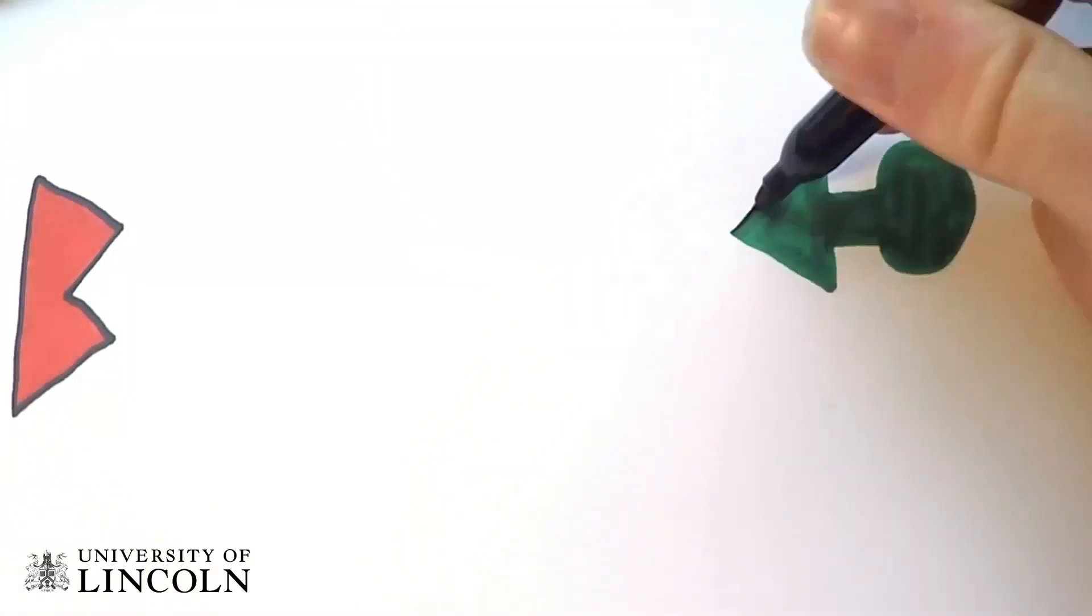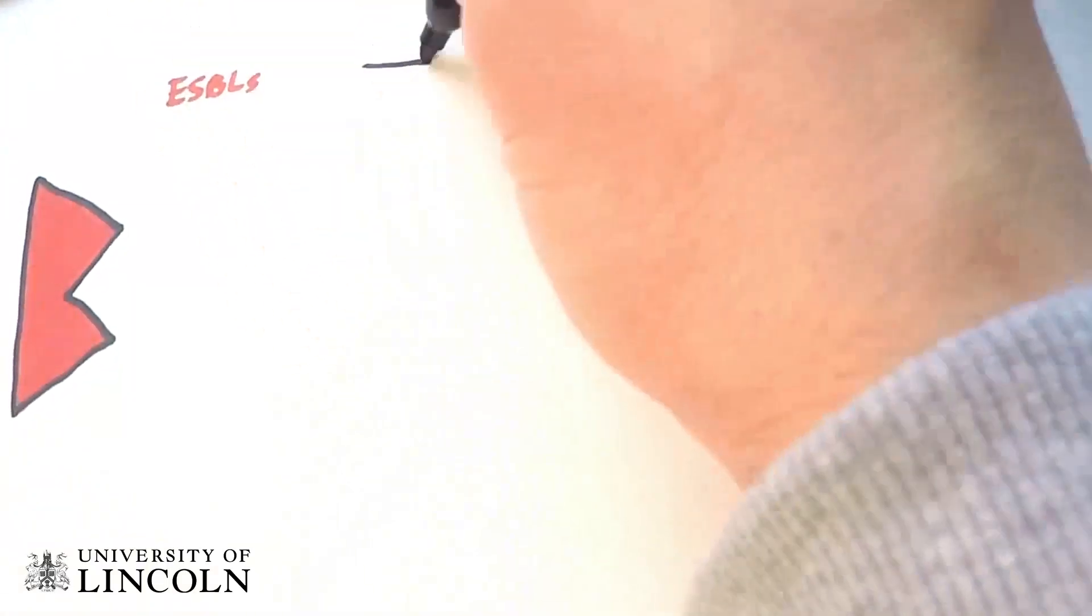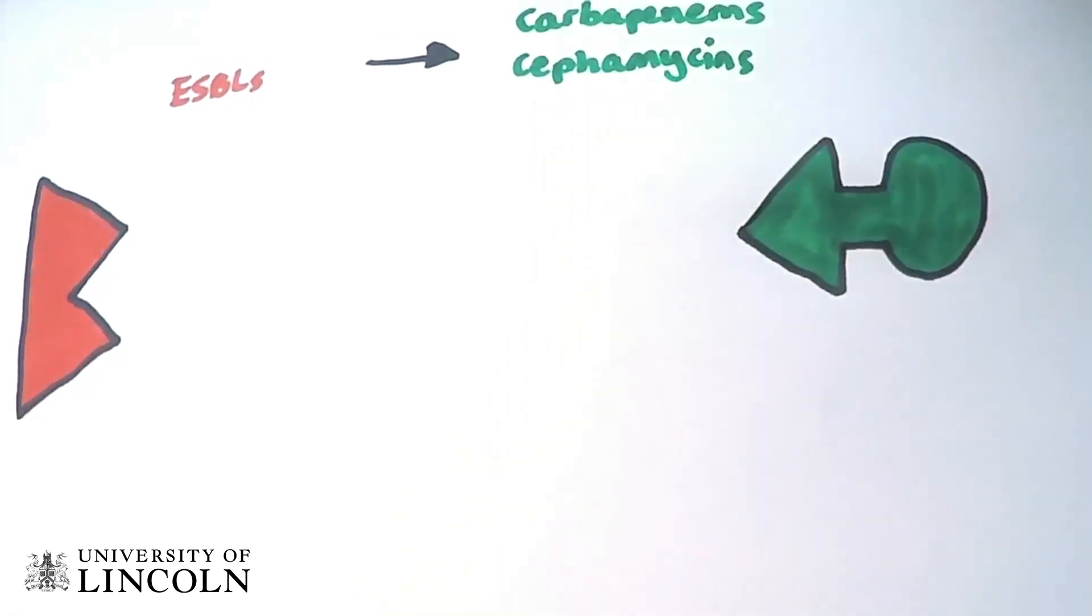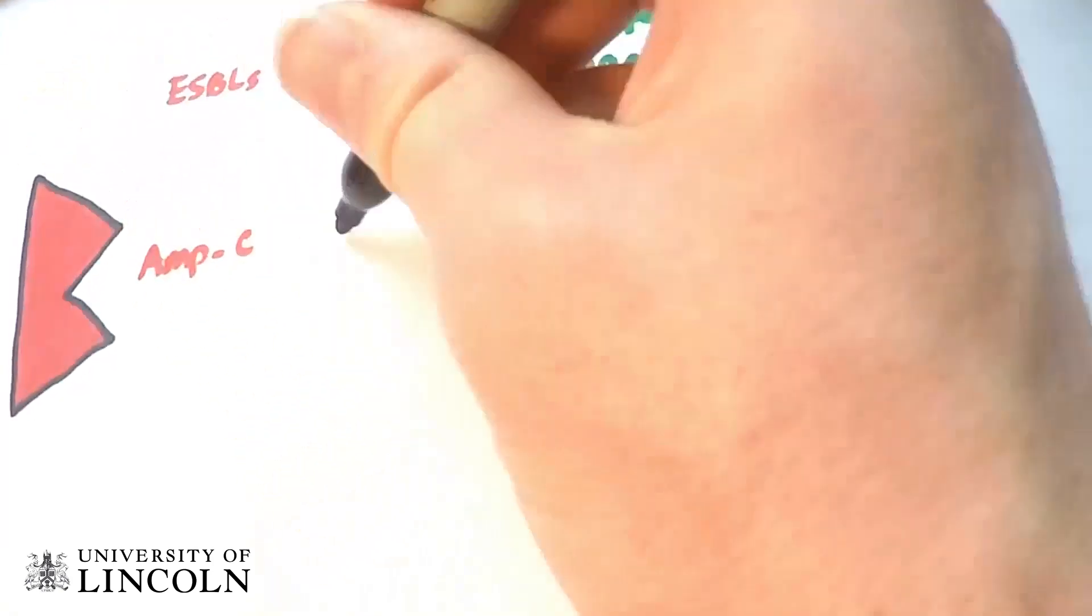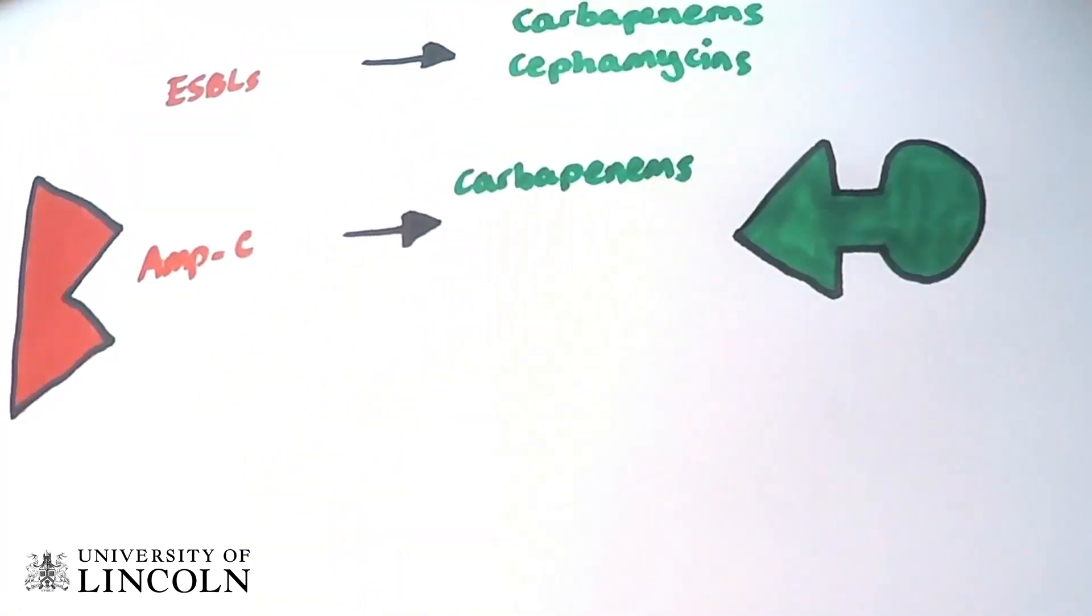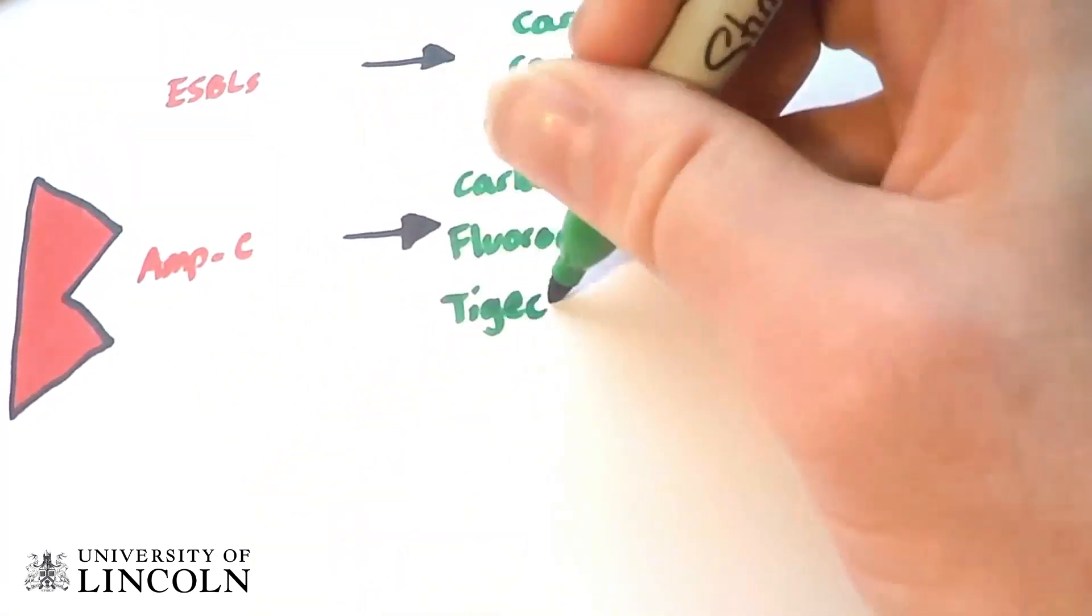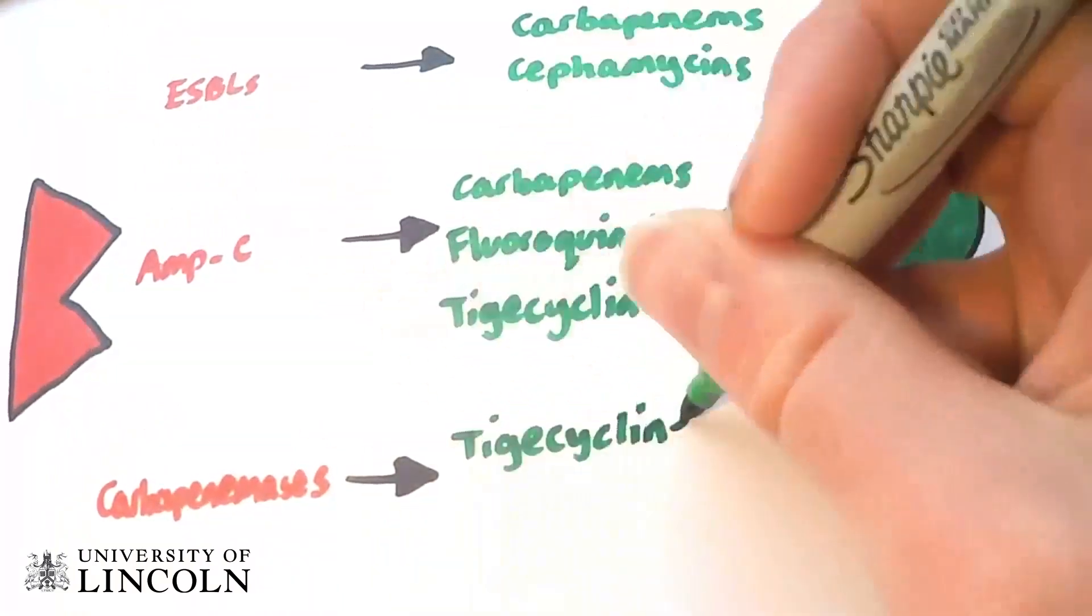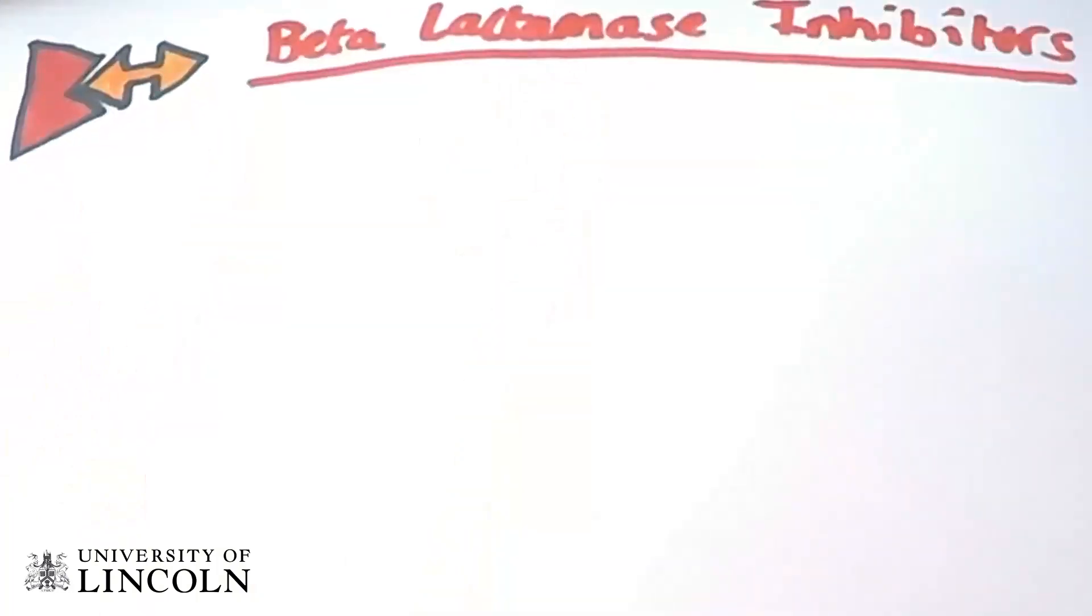Beta-lactamases do not inactivate all beta-lactam antibiotics. ESBL producers are susceptible to carbapenems and cefamycins. AMP-C producers are susceptible to carbapenems, fluoroquinolones, and tigecycline, and carbapenemases are susceptible to tigecycline and polymyxins. Beta-lactamase resistance can be counteracted by use of inhibitors.